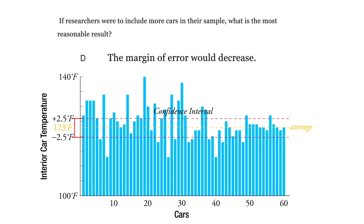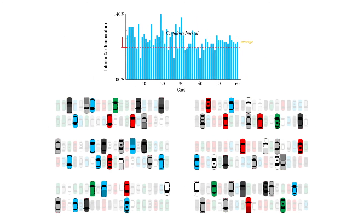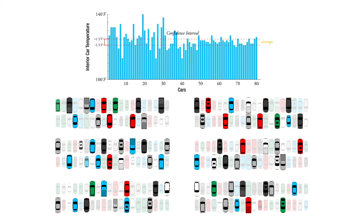The margin of error is 2.5 degrees. As we include more cars in our sample, we're getting closer and closer to testing all the cars in the parking lot, so we feel more and more confident that our 123 degrees Fahrenheit measurement is in fact the true average. If we measure more of the cars, we feel more confident, and our margin of error is going to decrease — from 2.5 degrees Fahrenheit down to maybe 2 or even 1.5 degrees — as we test more cars and get closer to confirming the true average.